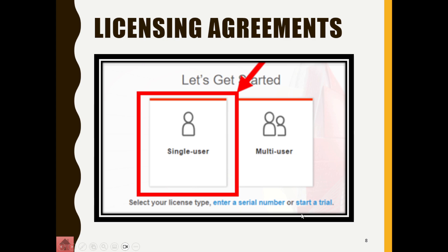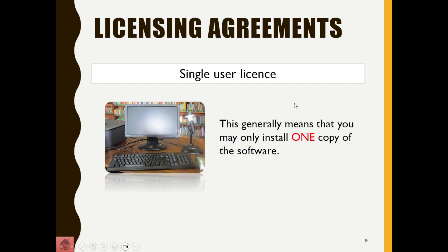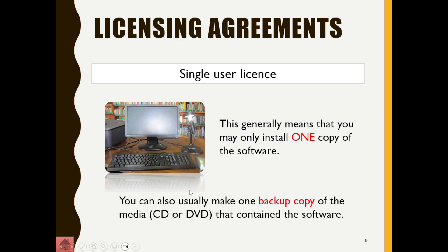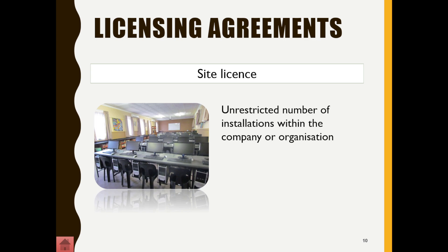On a network, software can be installed as a single-user or multi-user license. A single-user license means you may only install one copy of the software, and you are usually allowed to make one backup copy — one PC, one backup, that's it.